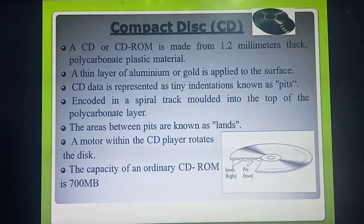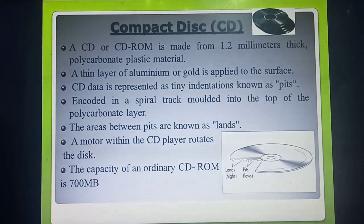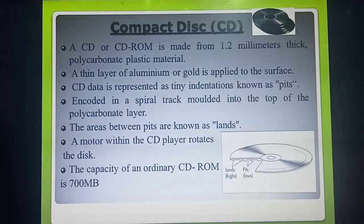Let's recall the points about CD. CD is made up of 1.2 millimeters thickness, made up of polycarbonate plastic material. On the top layer of the CD, aluminum or gold is applied on the surface. Data is represented as small tiny points called pits. The CD is enclosed in a spiral track and covered with a polycarbonate layer. The higher points are called lands and the lower points are called pits. The area between pits is called lands. The motor rotates when the CD is fixed in the drive, and what is copied plays. The ordinary capacity of CD-ROM is 700 MB.